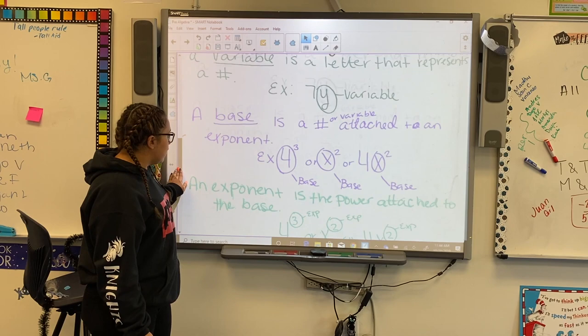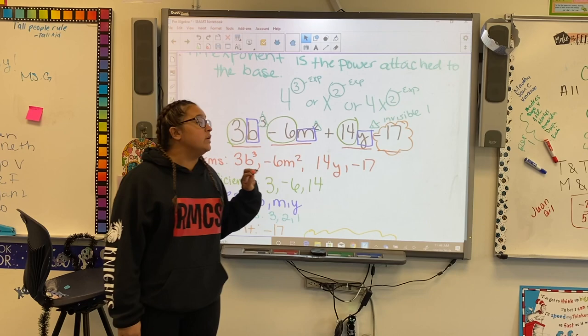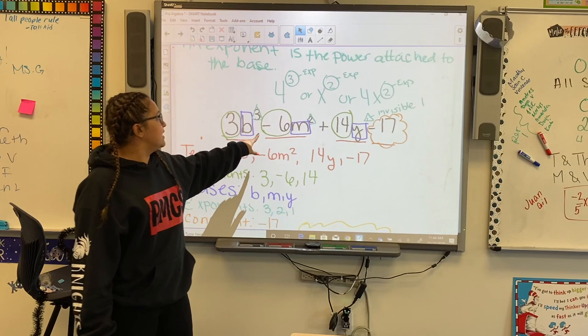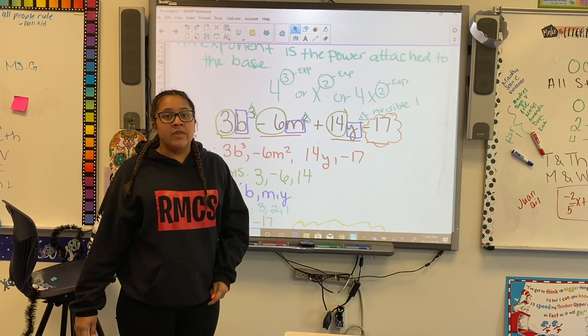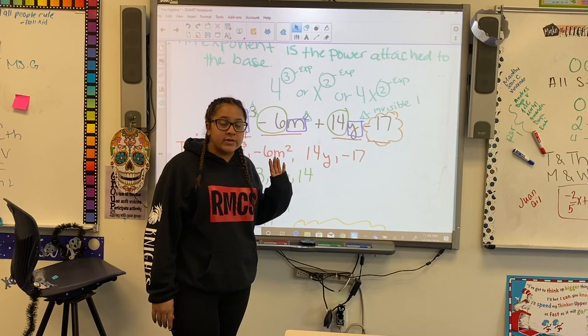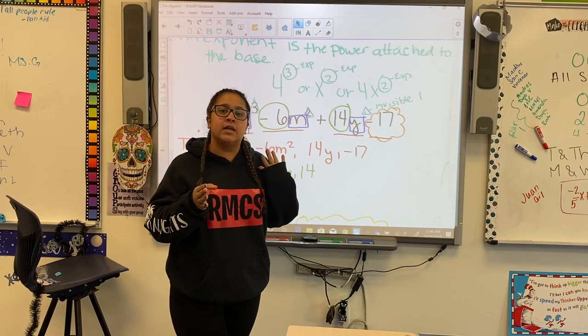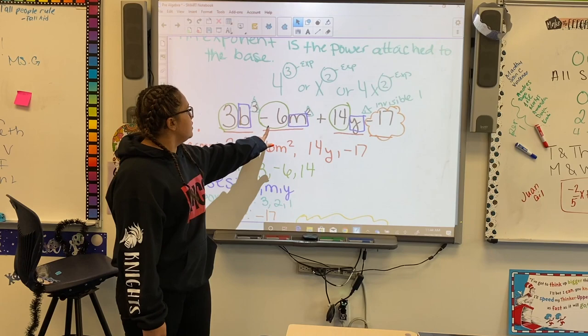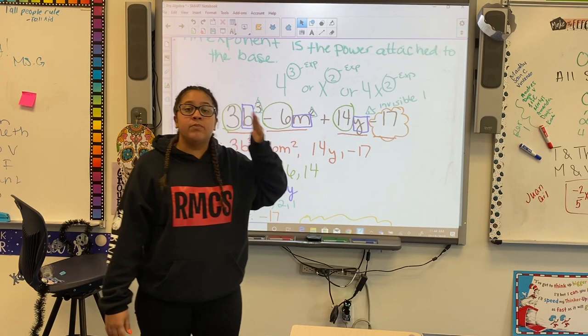So I'm just going to slide back down here. This is the example that we did in your notebooks: 3b to the 3rd power minus 6m squared plus 14y minus 17. And the question was, is this an expression or an equation? This was an expression. Why? Because there is no equal sign. The difference between an expression and an equation is whether there's an equal sign or not. There are 1, 2, 3, 4 terms separated by either a plus sign or a minus sign.